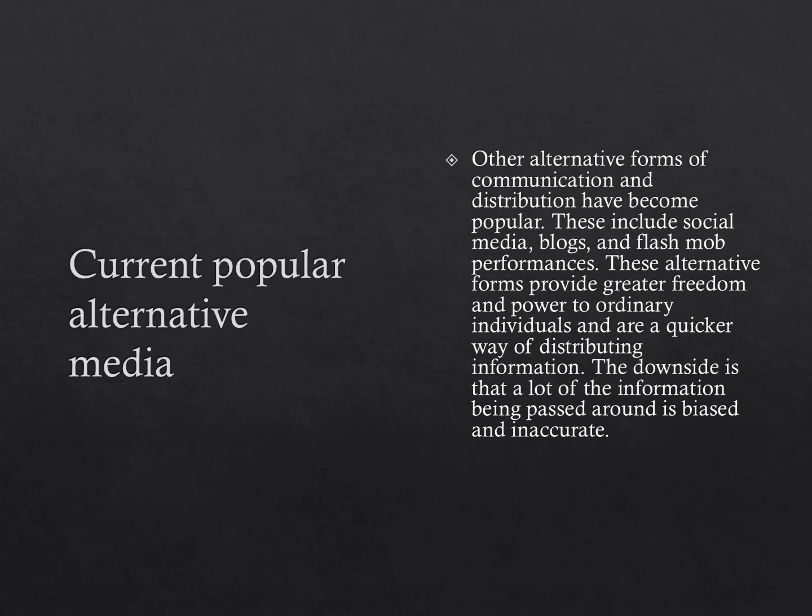Other alternative forms of communication and distribution have become popular. These include social media, blogs, and flash mob performances. These alternative forms provide greater freedom and power to ordinary individuals and are a quicker way of distributing information. The downside is that a lot of the information being passed around is biased and inaccurate.